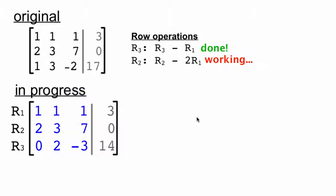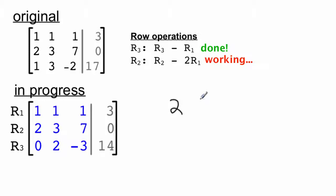Our next row operation is going to be row 2 subtract twice the values of row 1. What this will do is this will put a 0 in this 2 position right here. And that will get us closer to row-reduced echelon form. 2, 3, 7, 0 minus twice the values in row 1, which is 2, 2, 2, 6. We get 0, 1, 5, and negative 6. Let's update the in-progress matrix.